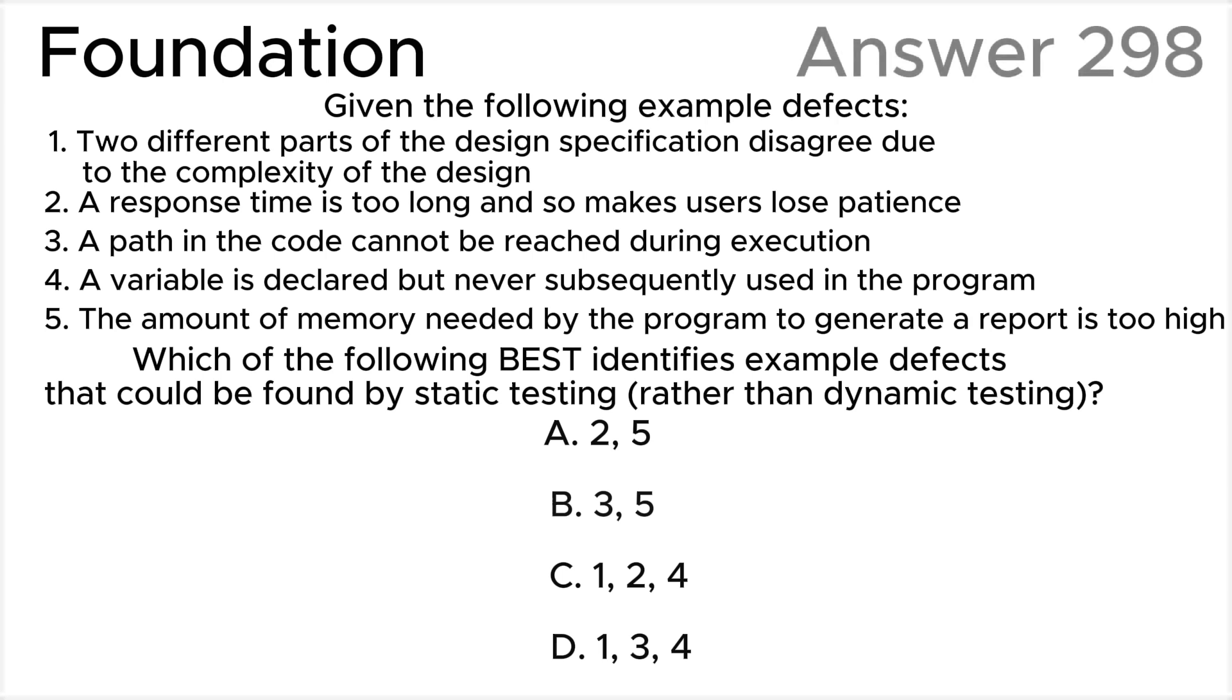Considering each of the listed example defects, let's look at all the statements according to ISTQB syllabus. Statement 1: Two different parts of the design specification disagree due to the complexity of the design. This is an example of a specification defect which includes inconsistencies, ambiguities, contradictions, omissions, inaccuracies, and duplications, which can most easily be found by static testing.